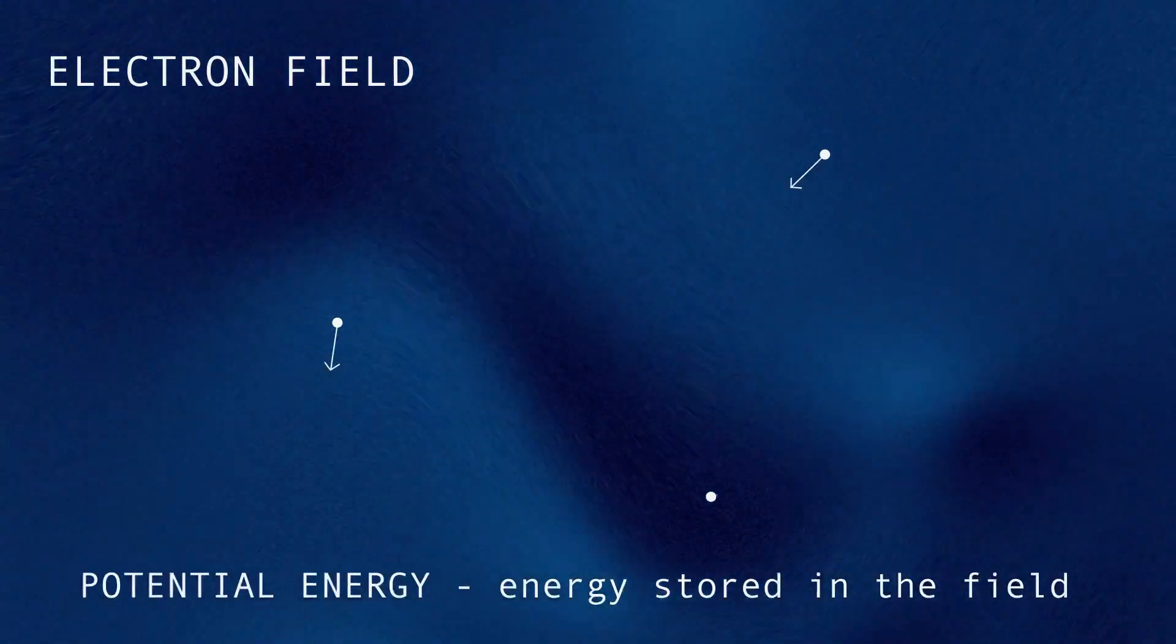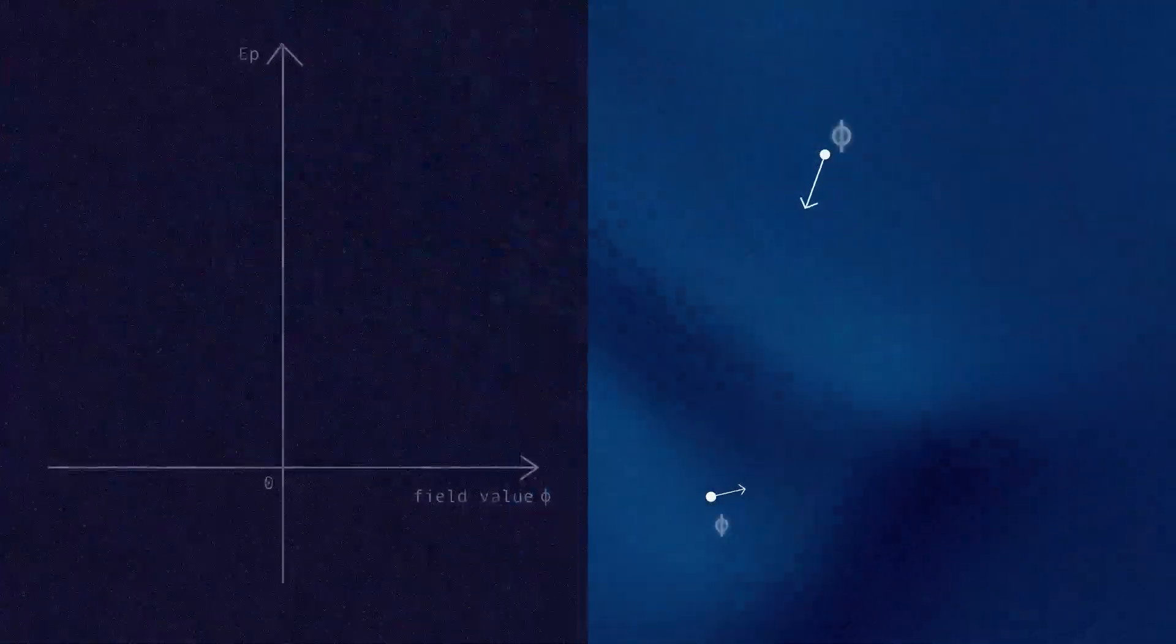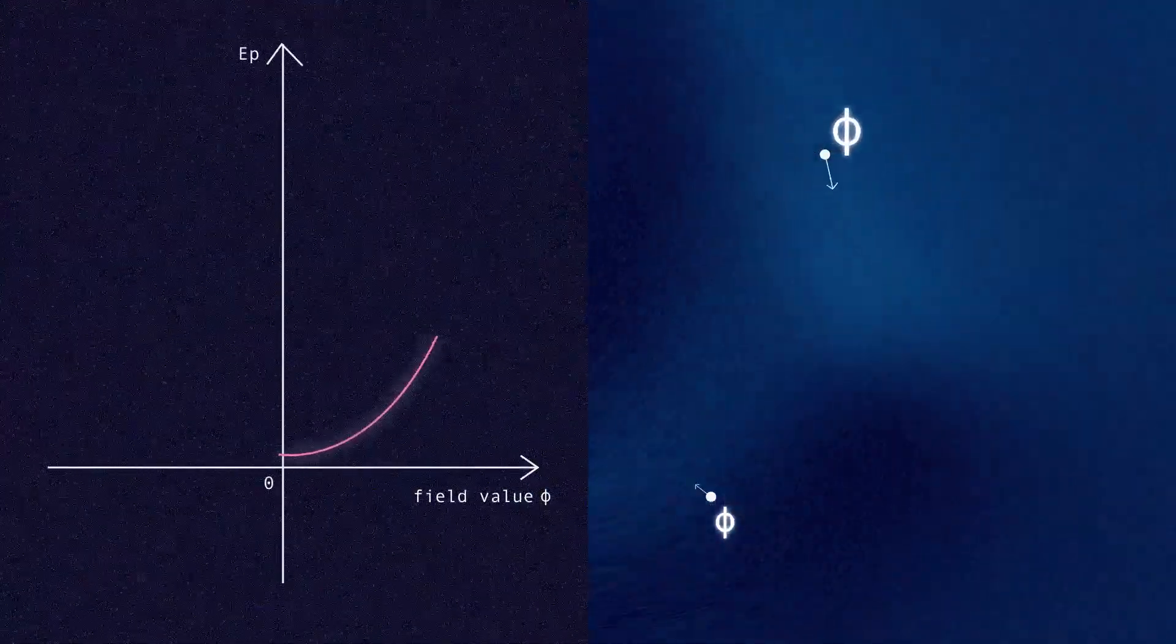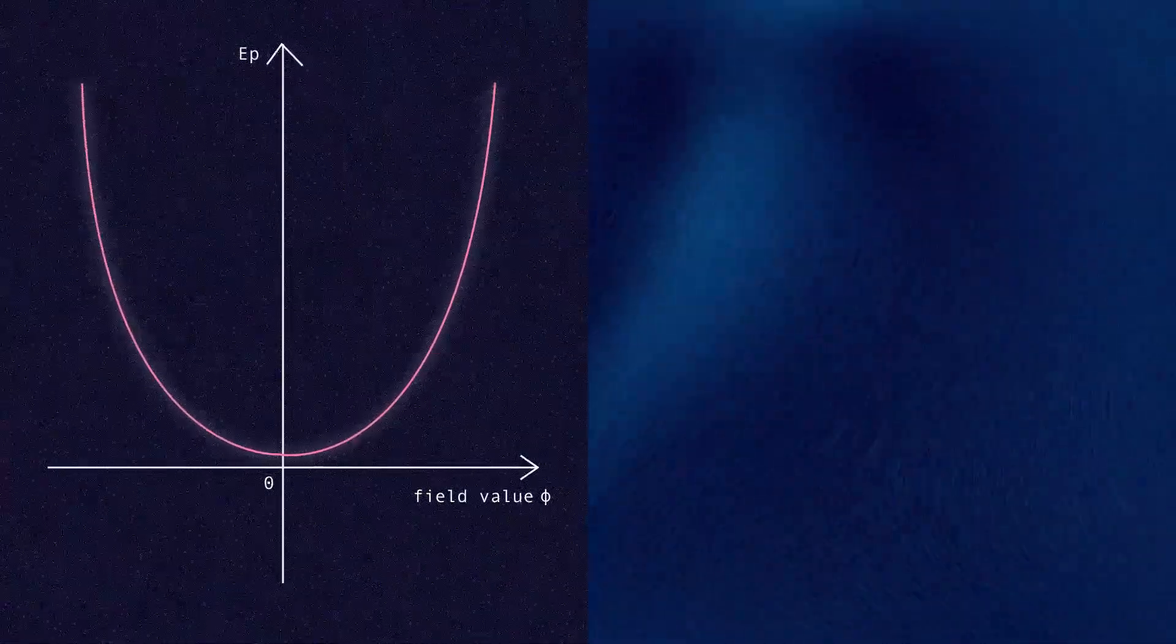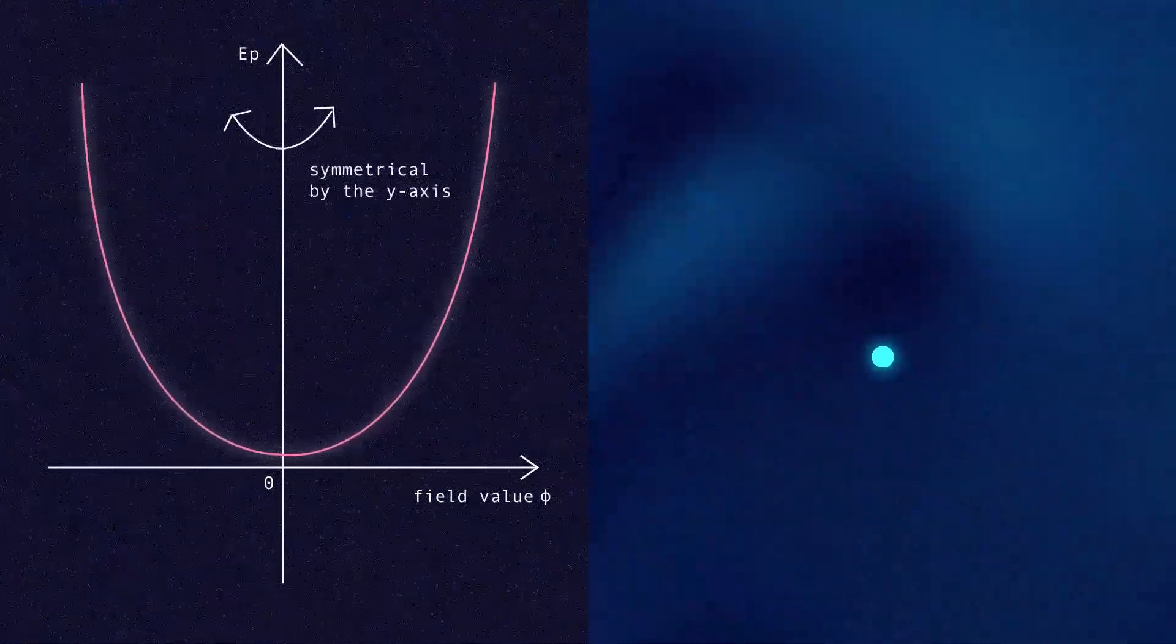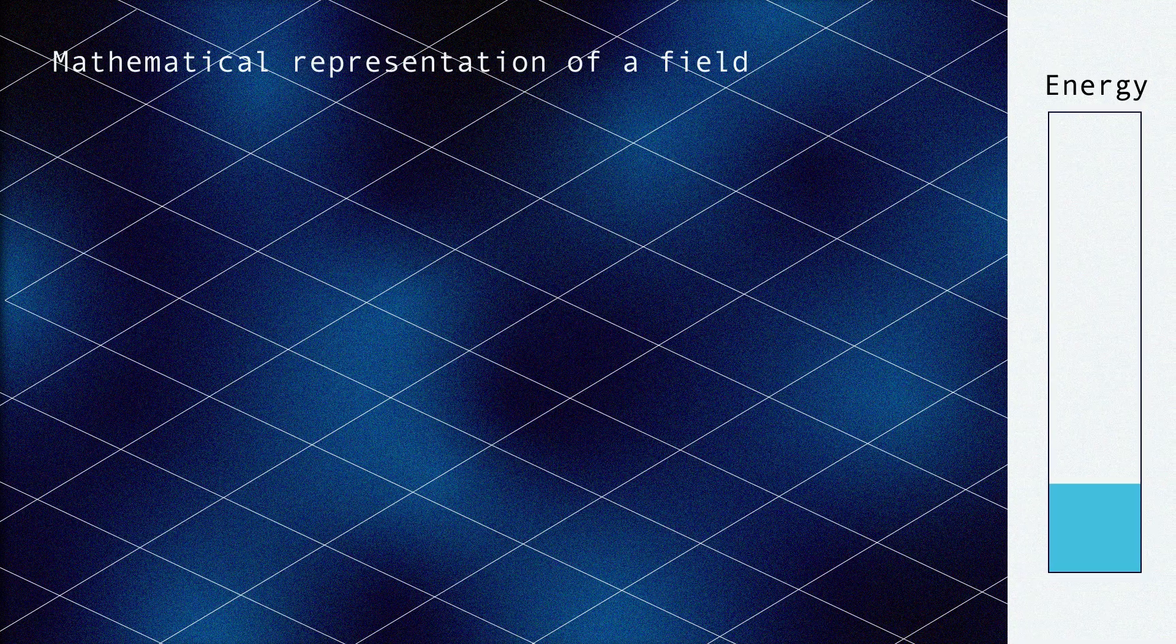Fields also store potential energy, which is used during interactions. The higher the field value at a point, the more potential energy it stores. This symmetrical relationship means that potential energy doesn't change if we move anything in the system. The state of a field is determined by its energy.